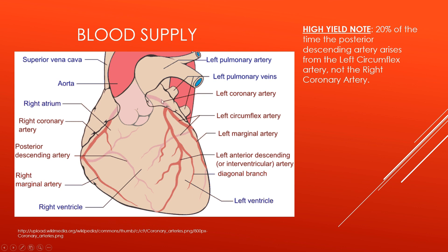The left coronary artery also gives rise to the left circumflex artery. The right coronary artery gives rise to the posterior descending artery, which loops around the back of the heart and travels down, supplying the posterior portion of the interventricular septum. The two most important points for Step 1 are that occlusion of the left anterior descending artery has devastating effects — that's why it's called the widowmaker — and it damages a huge portion of the heart.